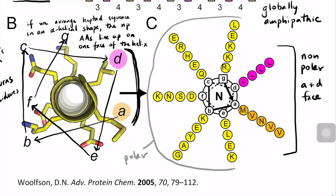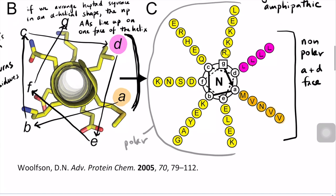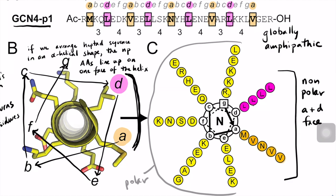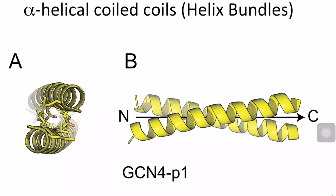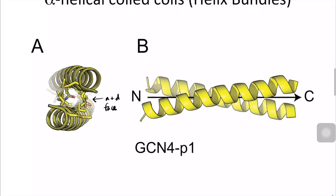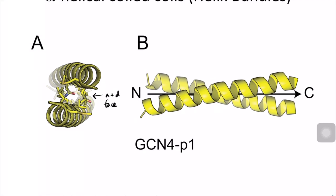We know that nonpolar residues need to be sequestered from water. What if we lined up two of these helices together with their nonpolar faces interacting with each other? Would that successfully bury the nonpolar residues from solvent? And the answer is yes. It turns out that sequences with this characteristic heptad repeat tend to form alpha helices and then those alpha helices interact with each other. This particular sequence forms what we call a coiled-coil dimer in which two alpha helices associate, with the A and D position residues at the interface, burying those nonpolar amino acid residues from solvent.